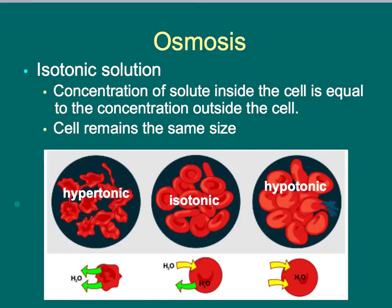Iso means same, so an isotonic solution has the same concentration on either side of the membrane. These graphics show what happens to cells in each of the three types of solutions. The concentration of salt on either side of the membrane is very important, but it's the water that does the moving — and it moves opposite to what you might expect. When there's more salt on the outside of the cell, there's more water on the inside, so water moves out to equalize concentration.